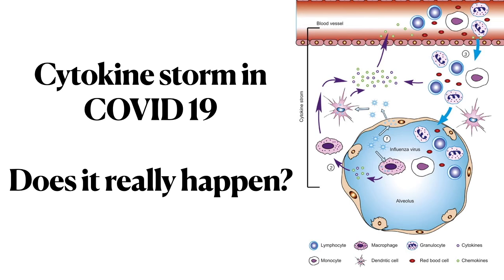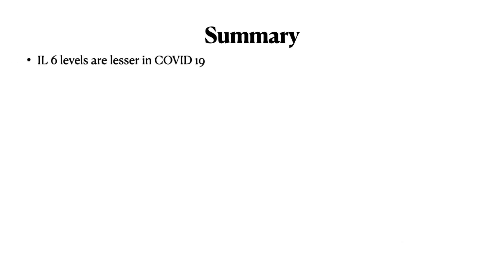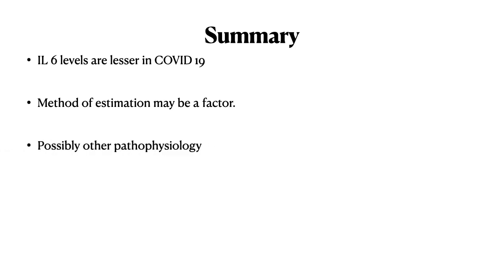Coming to the answer to our question — does COVID-19 have a cytokine storm? Do we really see raised interleukin-6 levels? To summarize: IL-6 levels are much, much lesser in COVID-19, at times 500 times less than severe ARDS reported in previous literature. Some of the lesser value can be attributed to the method of estimation, but 500 times is too large a difference. This could indicate other pathophysiological mechanisms affecting COVID-19, especially endothelitis and thrombogenesis. The attribution of COVID-19 to cytokine storm based on interleukin-6 levels is limited by data from a very selected group — the most critically ill patients — yet even their values are 500 times less than those reported in other forms of ARDS.